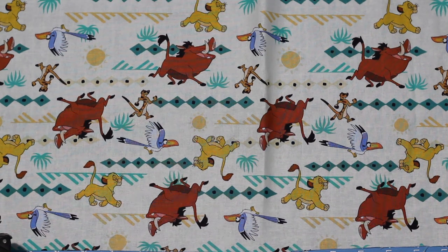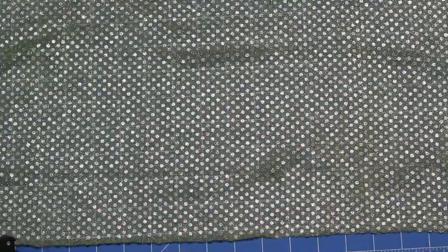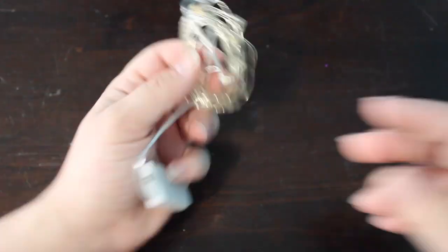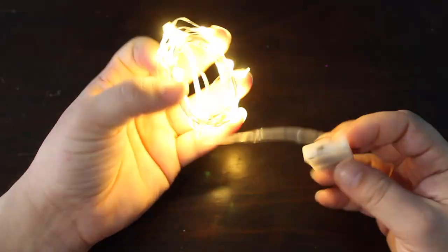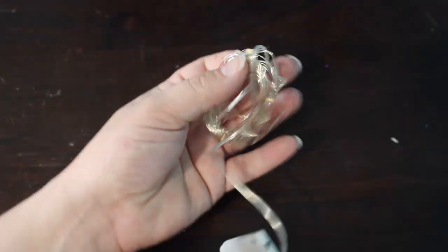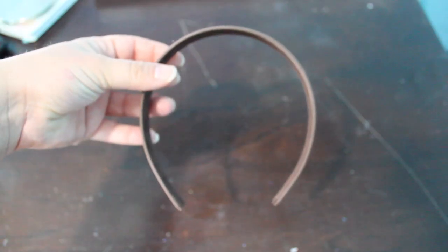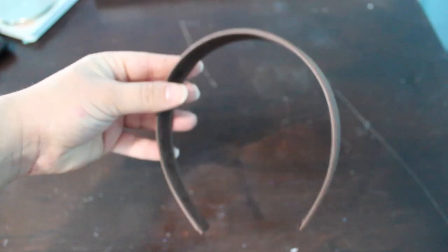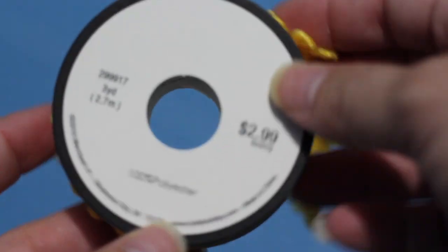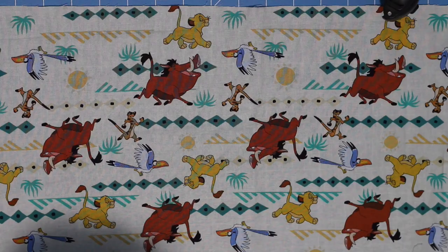I found this Lion King fabric at Hobby Lobby. I got the gold sequin fabric for the bow at Walmart, and then you will also need these string small battery pack fairy lights. I get mine off Amazon and there is a link in the description box below. You're also going to need a filling for your bow, a one-inch headband, and a trim for your ears. I got mine at Hobby Lobby.